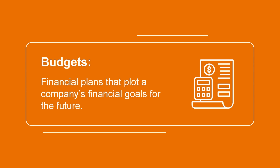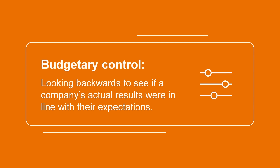Budgets are financial plans that plot a company's financial goals for the future. They help companies determine the required actions necessary to meet their objectives. Standard costs are used during the budgetary control process, which consists of looking backwards to see if a company's actual results were in line with their expectations. Comparing actual results to the budget can help an organization pinpoint things that went well and take corrective action towards improving things in the future.